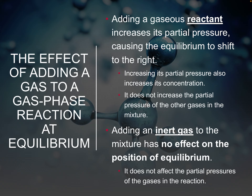If we add a gaseous reactant — one that shows up in the equation — that's going to act just like adding more of a solution. If we increase the concentration of a reactant, it will shift away from it, going toward the products to relieve that stress. The partial pressures of gases work exactly the same way: adding more reactant increases the partial pressure of that reactant, so the equilibrium shifts to use it up and make more product. Increasing partial pressure and increasing concentration have essentially the same effect.